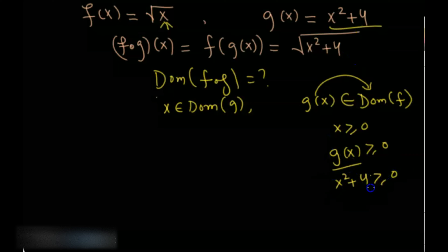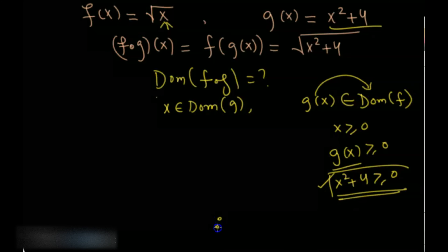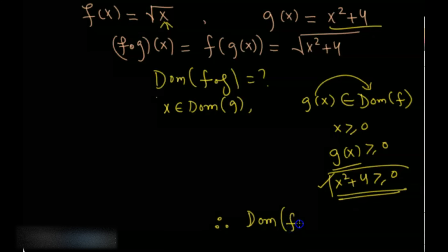Now x² + 4 is always positive for any real value of x — it is always positive. So this condition holds for every real number, and therefore the domain of f∘g is all real numbers.